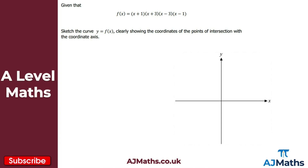Having our function in fully factorized form allows us to easily identify the solutions — where it cuts through the x-axis — and the y-intercept. We can identify the solutions by looking at our individual factors. So the solutions here are x equals minus 1, minus 3, positive 3, and positive 1. Those are the four points where it cuts through the x-axis.